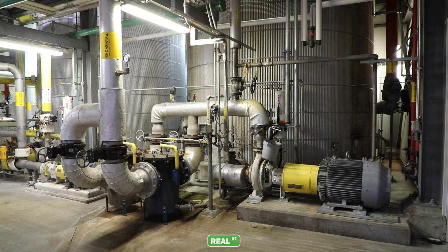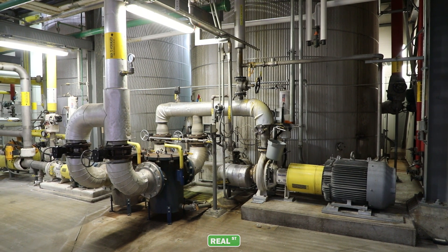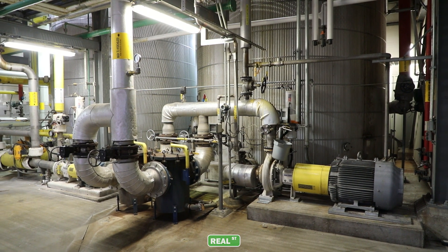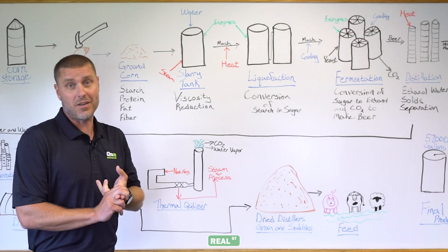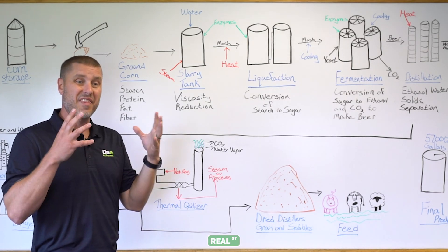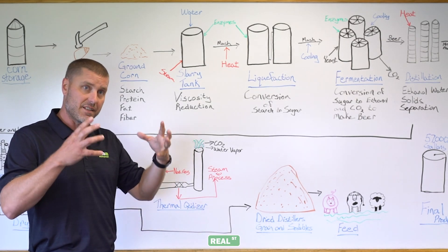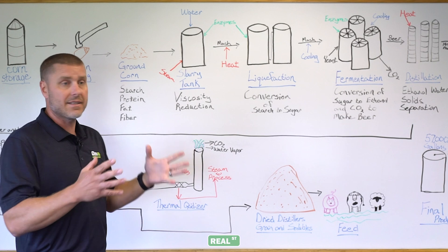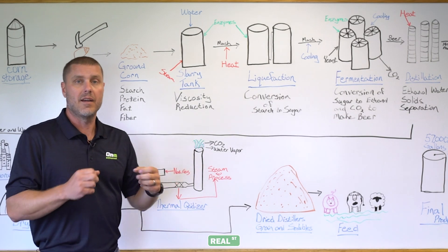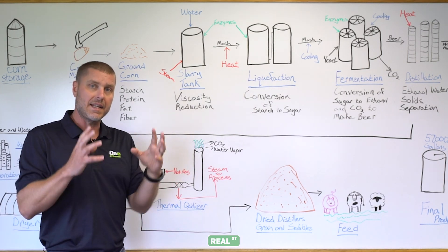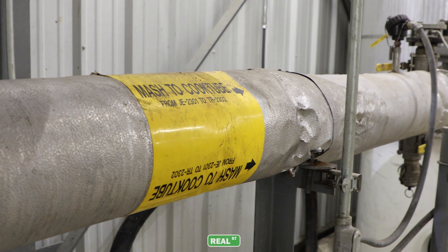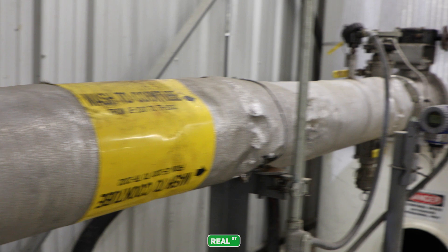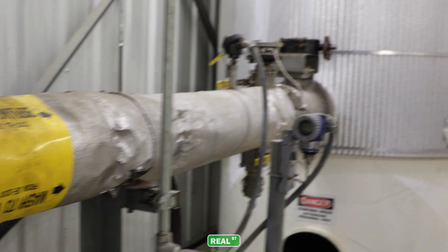That corn is then conveyed into our slurry tank, where we add hot water and enzymes. Hot water and starch form a thick, viscous, doughy mixture. The enzymes that we add help to break that down into a thin, pumpable liquid.